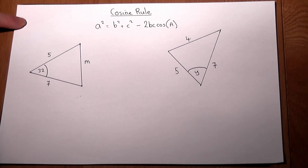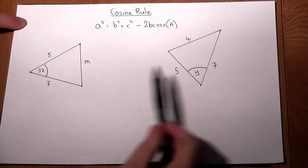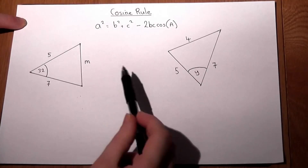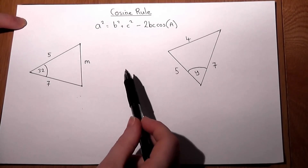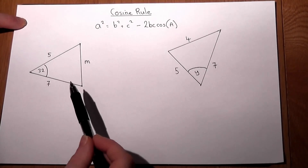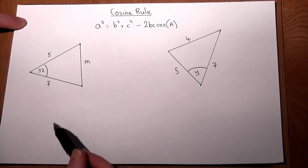This video looks at the two basic examples of using the cosine rule: one to find a side and the other to find an angle.